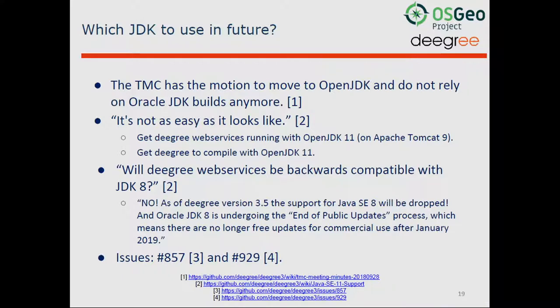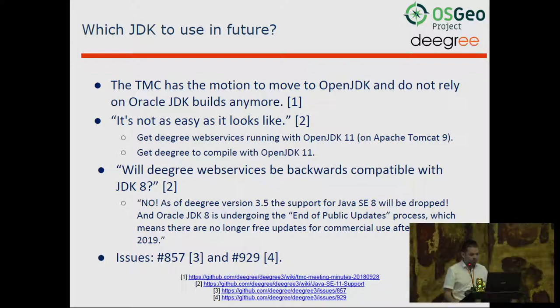Another topic we are currently working on is JDK support. If you want to use Oracle JDK commercially, you have to pay a lot of money, so we decided to move to OpenJDK — in the future, OpenJDK will be the JDK build to use. There's still some work to do because we want to move to OpenJDK 11, which is the latest long-term supported version. Currently Degree is not even running with it, and we have to make sure it compiles with OpenJDK. When these changes are done, Degree will officially not be backwards compatible with JDK 8.